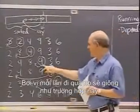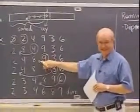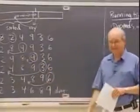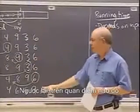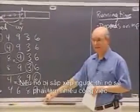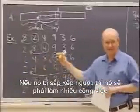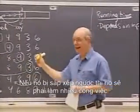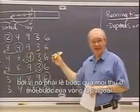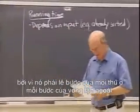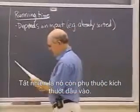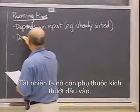Because every time through it is going to be like this case — it doesn't have to shuffle too many guys over because they are already in place. Whereas, what is the worst case for insertion sort? If it is reverse sorted, then it is going to have to do a lot of work because it is going to have to shuffle everything over on each step of the outer loop. In addition to the actual input, it depends, of course, on the input size.